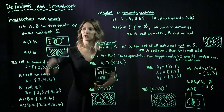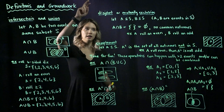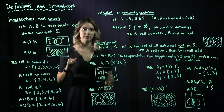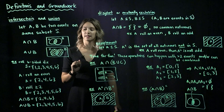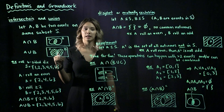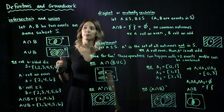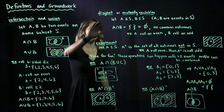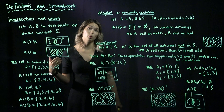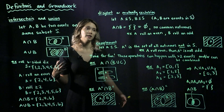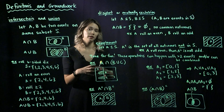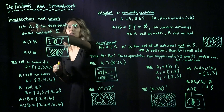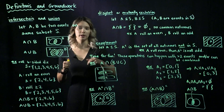So those are our definitions: intersection, union, disjoint, and complement. Complement, intersection, and union are operations, while disjoint is a way to characterize special sets that have nothing in common when we use the intersection operation.